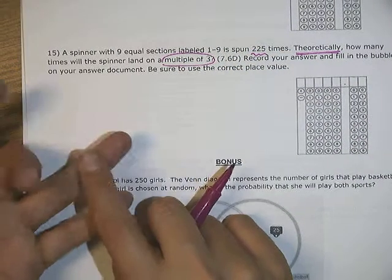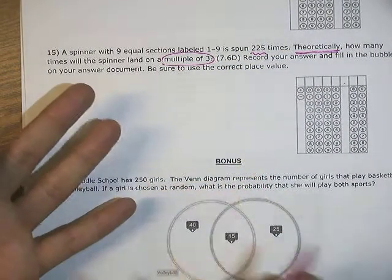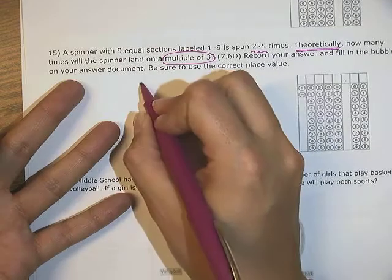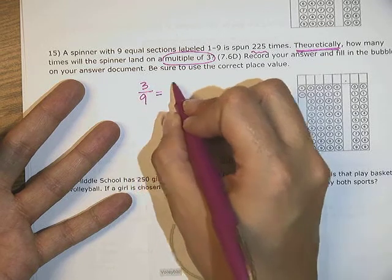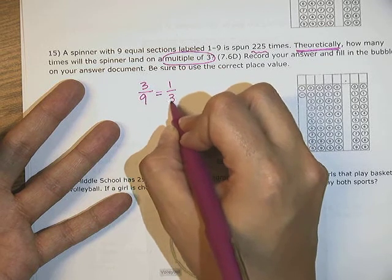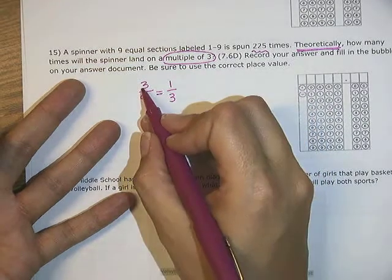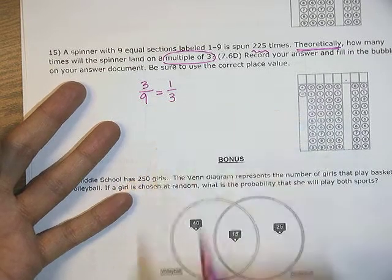Three, six, and nine are all multiples of three. So that's three out of my nine equal sections. That gets simplified to one third because three goes into three one time and three goes into nine three times.